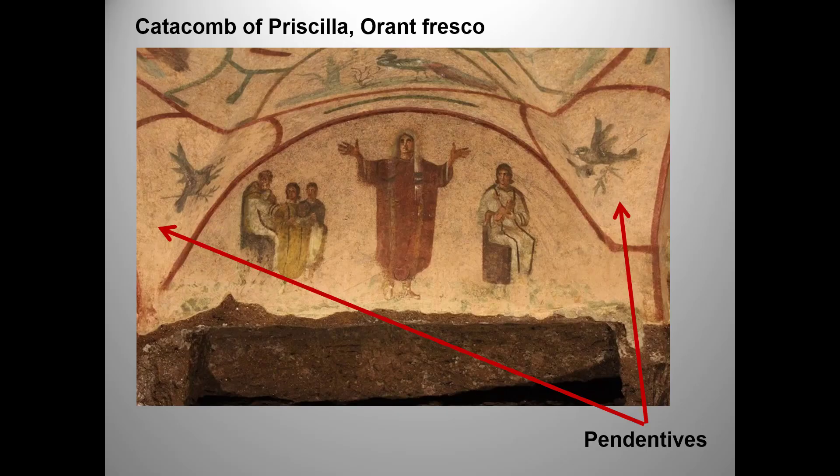In the pendentives — those are the somewhat triangular corners below the shallow dome — and in the shallow dome itself, we see doves, a symbol of peace and the Holy Spirit. We also see peacocks, which are a symbol of eternal life.